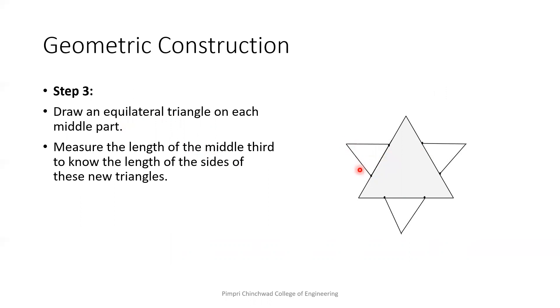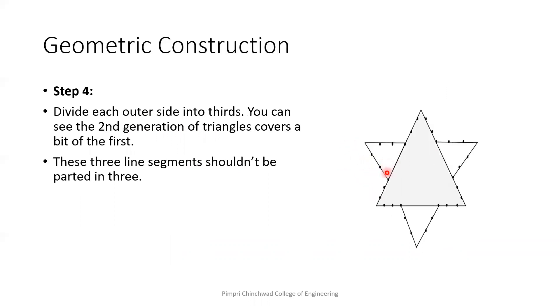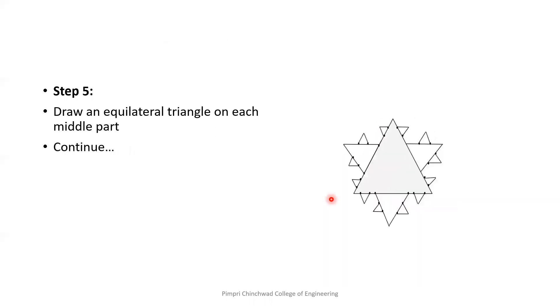So again, we have to measure the length of this part. We have to divide it into three equal parts like this. Create an equilateral triangle over here like this or like this. So this procedure will continue how long you want. Still you feel that it's not like a snowflake, you can continue and eventually the perimeter moves towards infinity.